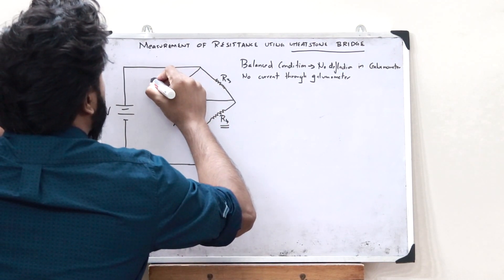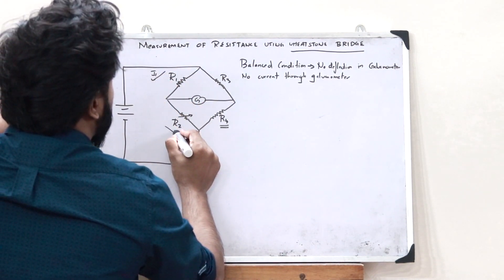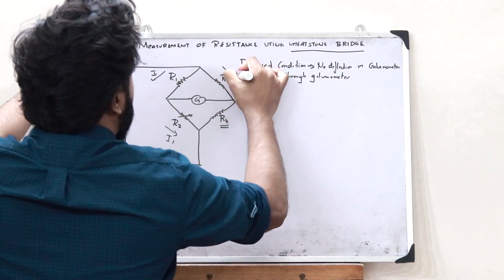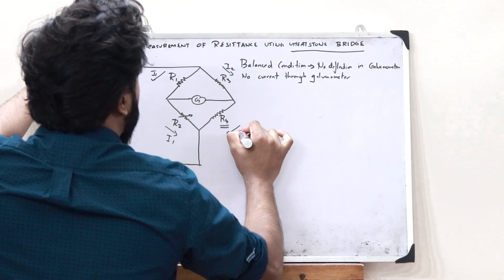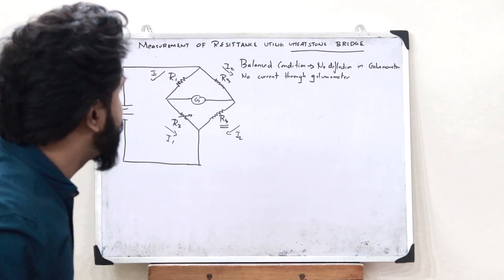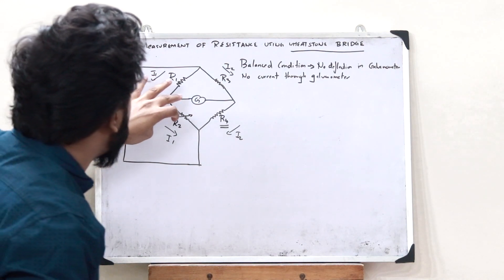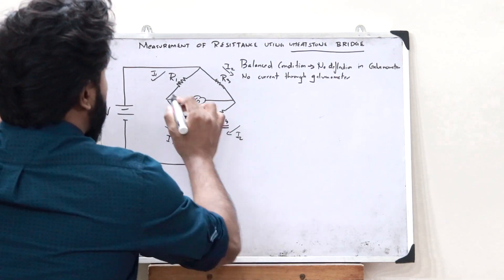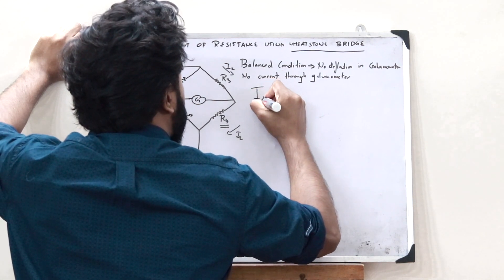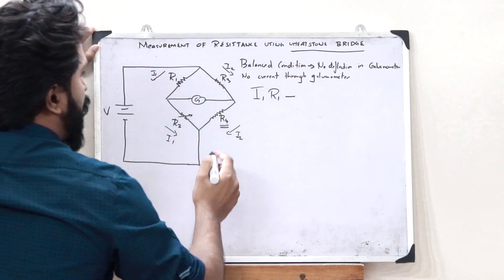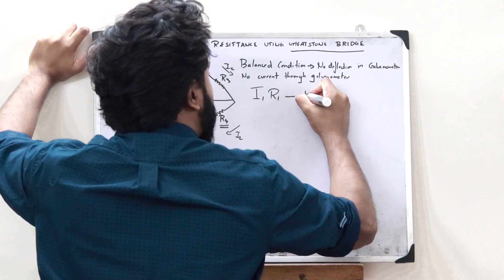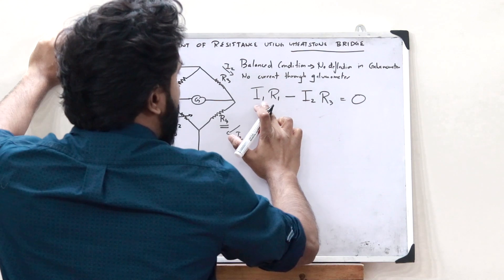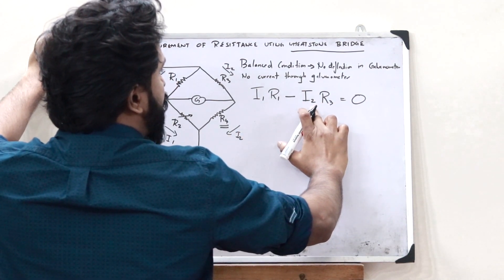If the current passing through R1 is I1, the same current will pass through R2 in the balanced condition, because there is no current passing through the galvanometer. And if the current through R3 is I2, the current passing through R4 is also I2. In the balanced condition, the potential difference between these two ends equals zero. That is, I1·R1 minus I2·R3 equals zero, which implies I1·R1 = I2·R3.